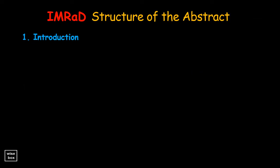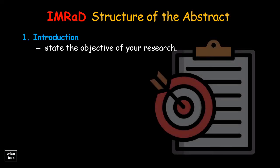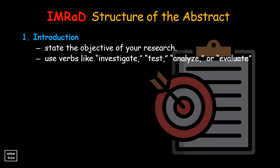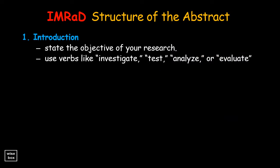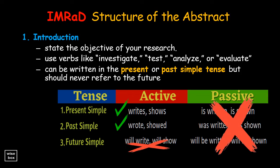After identifying the problem, state the objective of your research. Use verbs like investigate, test, analyze, or evaluate to describe exactly what you set out to do. This part of the abstract can be written in the present or past simple tense, but should never refer to the future, as the research is already complete.